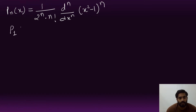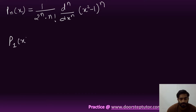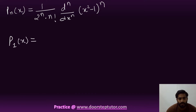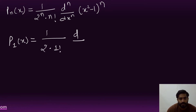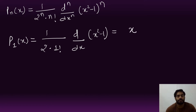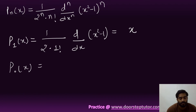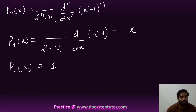If I put n = 1, the value becomes: 1/(2·1!) · d/dx (x² − 1) = x. Similarly, if I put n = 0, the term becomes 1.